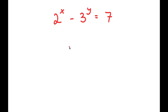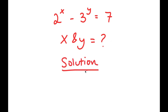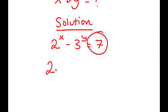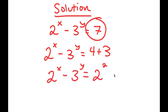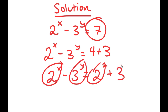In this problem I have 2 to the power of x minus 3 to the power of y is equal to 7, and I'm going to find the values of x and y. I'm going to rewrite 7 as 4 plus 3. The reason I did this is because 4 is the same thing as 2 squared. So now I have 2 to the power of x minus 3 to the power of y equal to 2 squared plus 3, and I have something in the form 2 to the power of a number and also 3 to the power of 1.